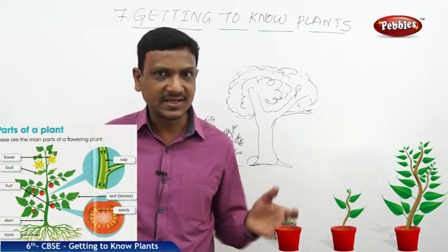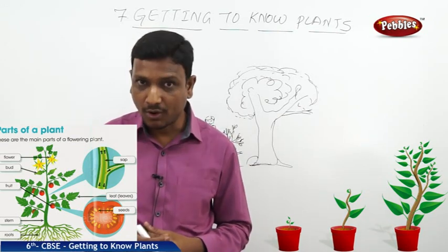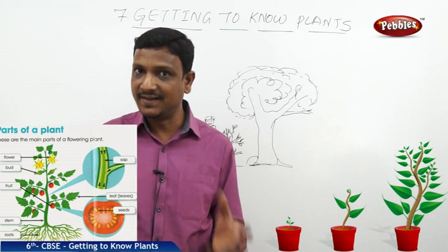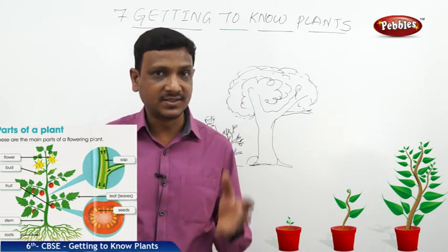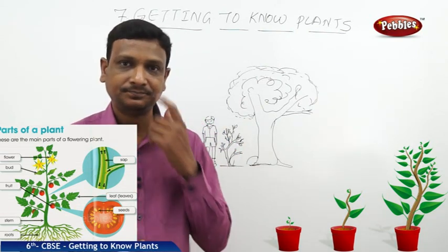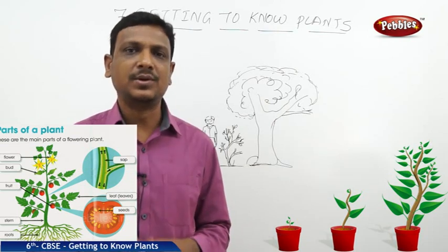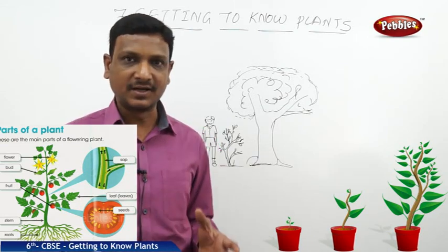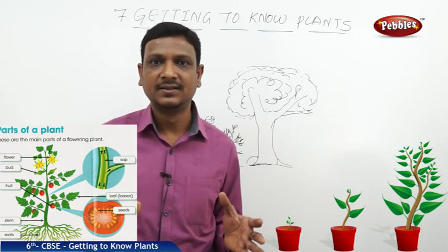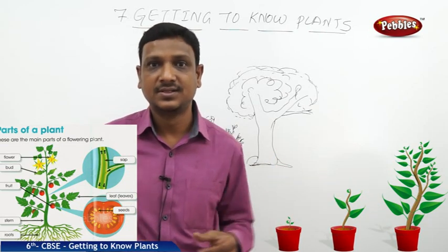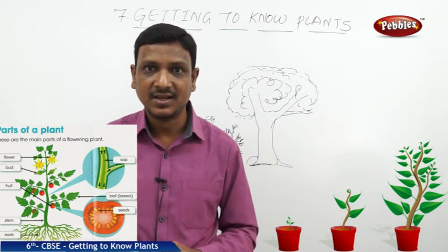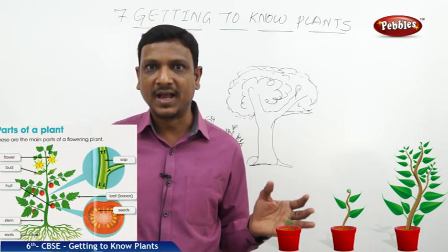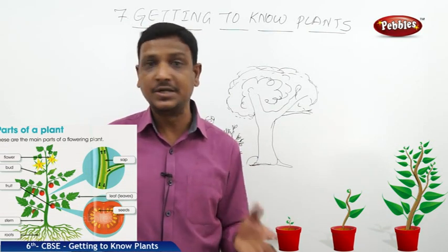But is this naming scientific? Shall we call the smaller ones plants and bigger ones trees? Or is there a systematic way of classifying plants? Let us explore some important facts about plants. The first thing we are going to see is how plants are grouped. As per their size and appearance, plants are grouped into three categories.